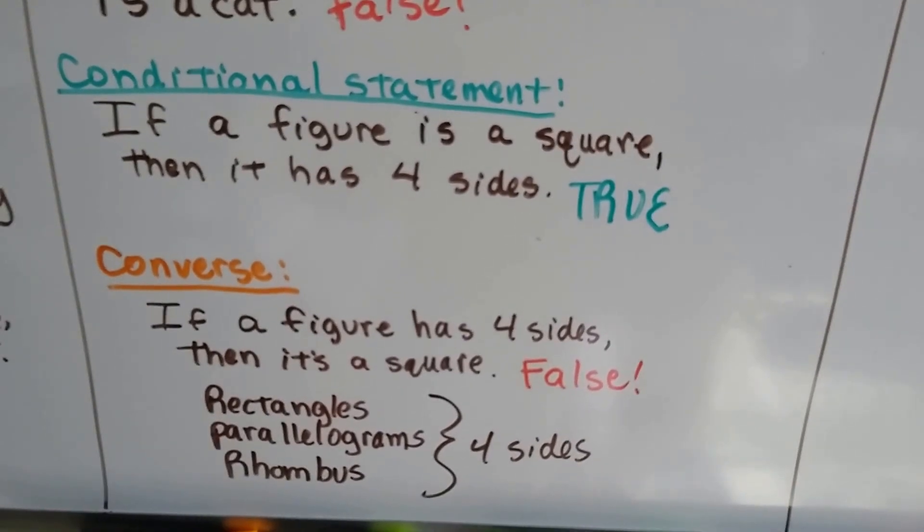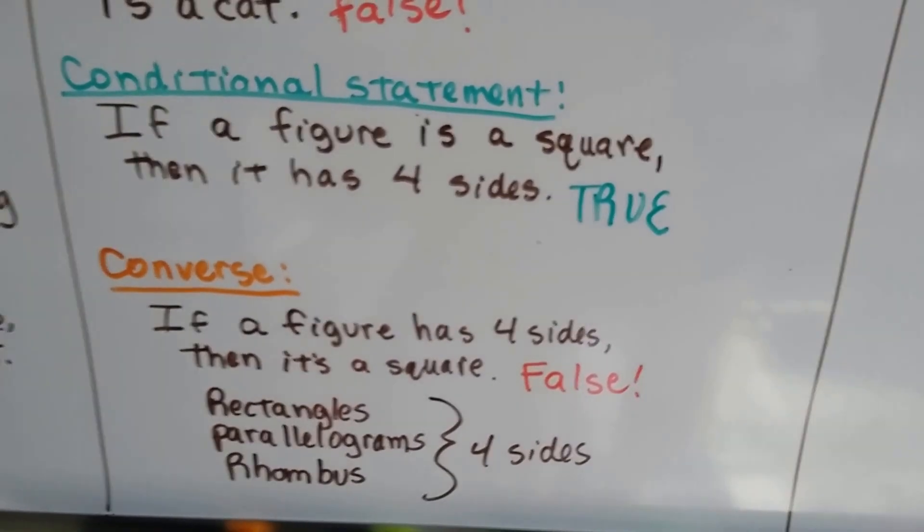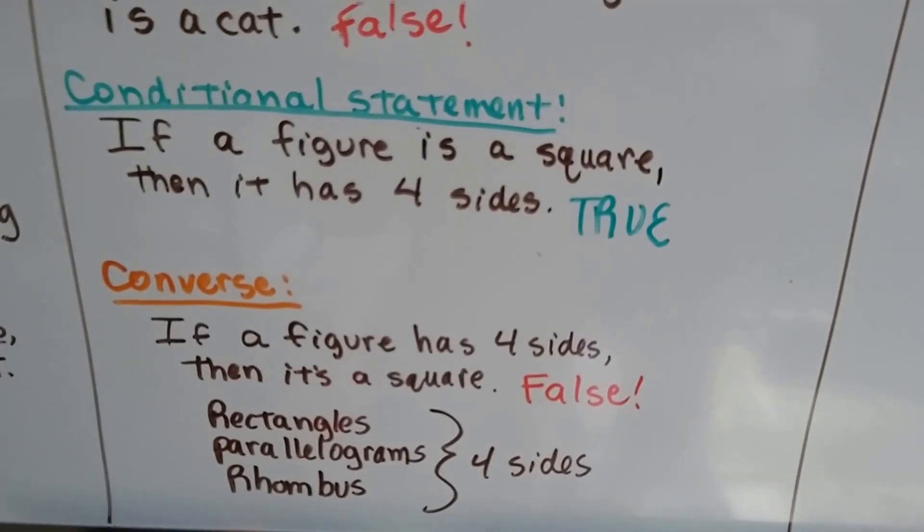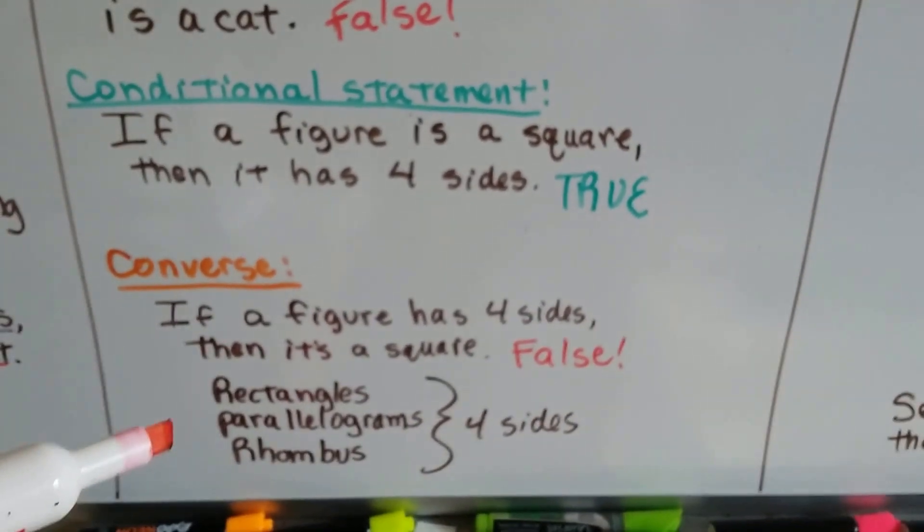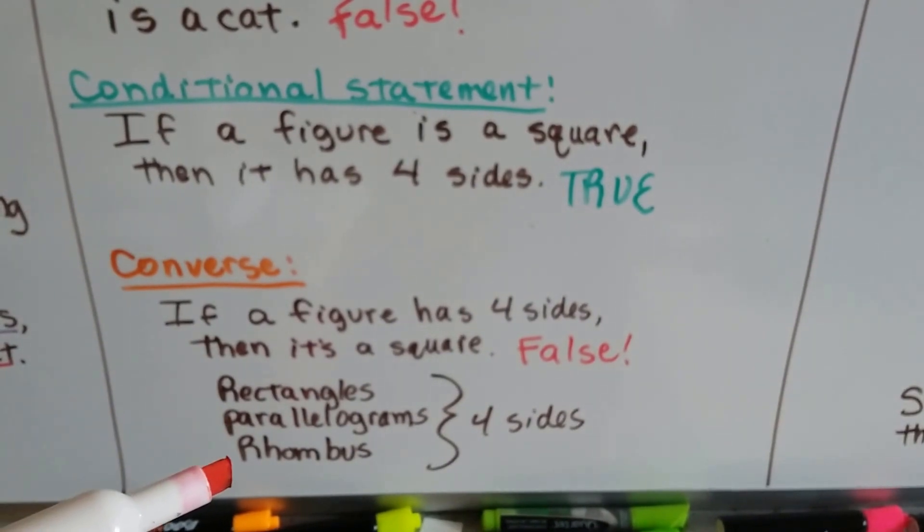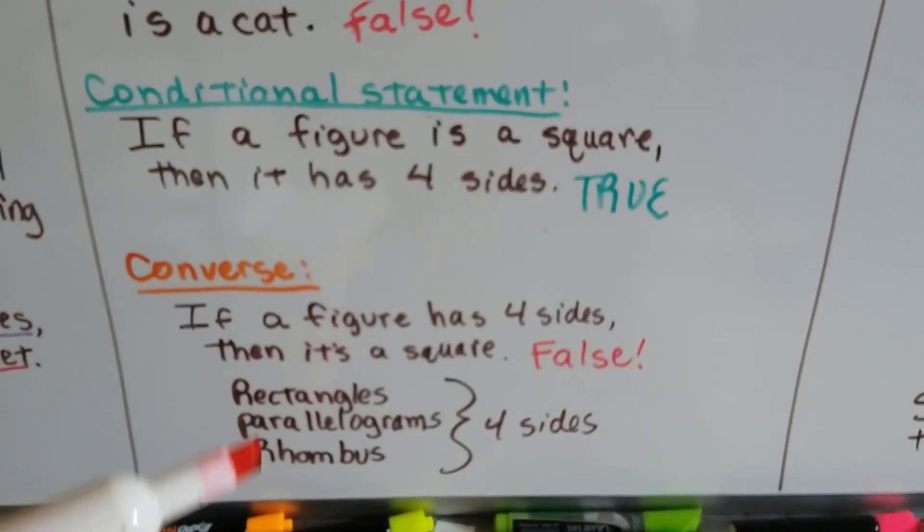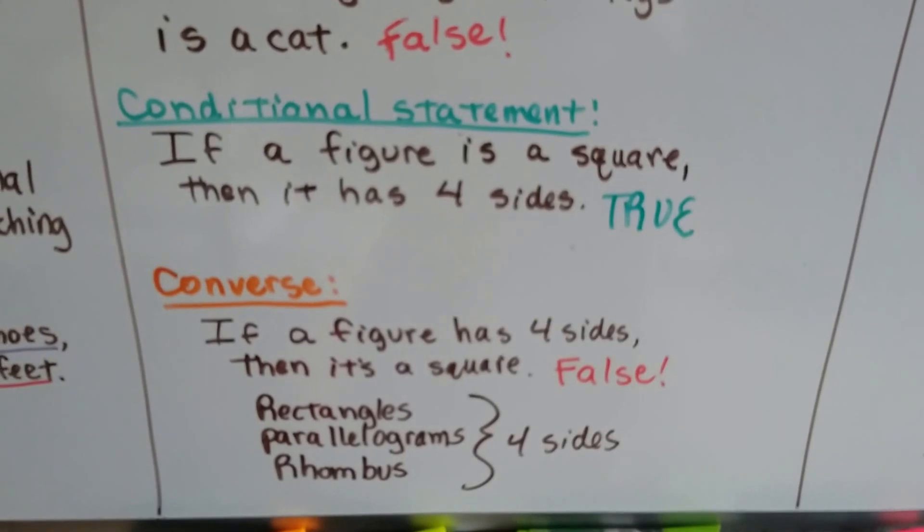But the converse is not true. If a figure has four sides, then it's a square. By flipping it around with the if and then, we get a false statement. It's not true because rectangles, parallelograms, and rhombuses have four sides and they're not squares, so that's false.